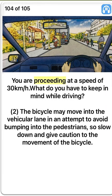You are proceeding at a speed of 30 km per hour. What do you have to keep in mind while driving? Two. The bicycle may move into the vehicular lane in an attempt to avoid bumping into the pedestrians, so slow down and give caution to the movement of the bicycle. True.